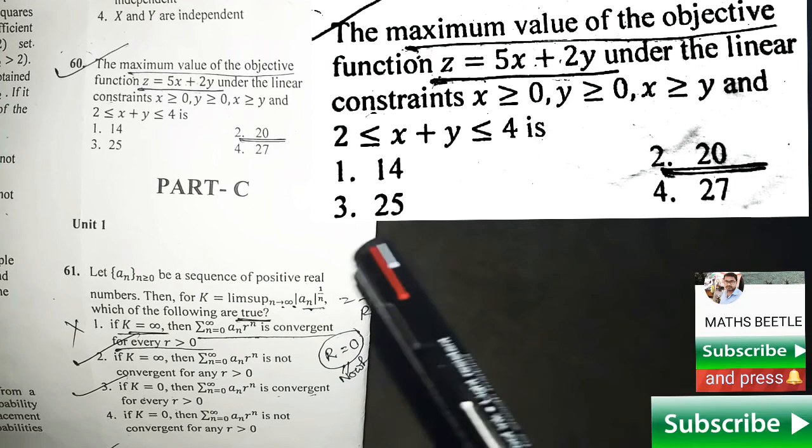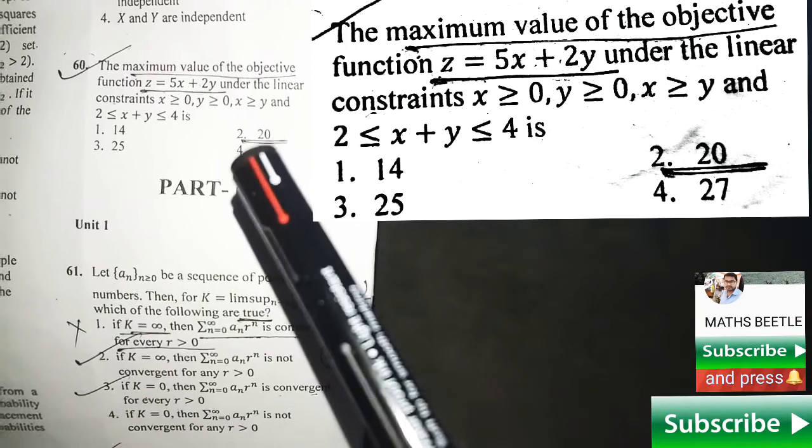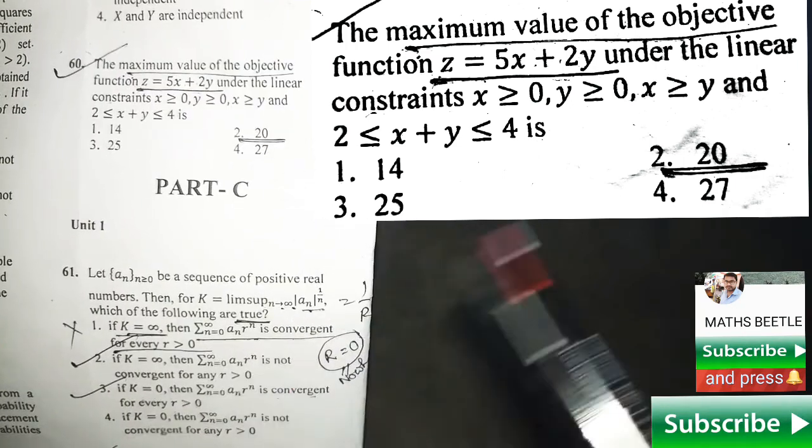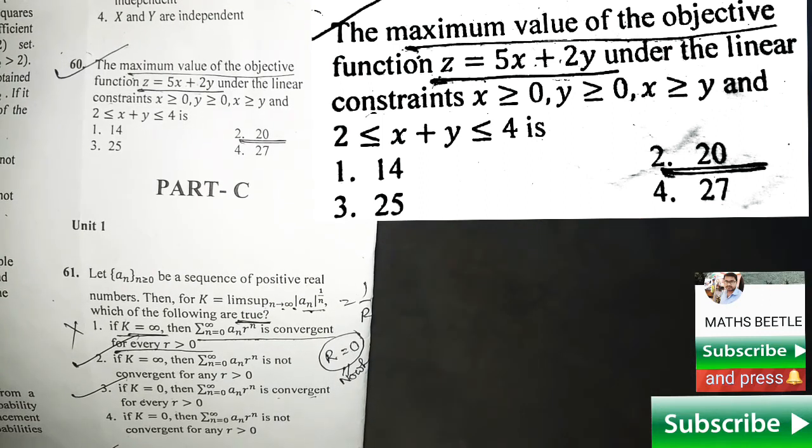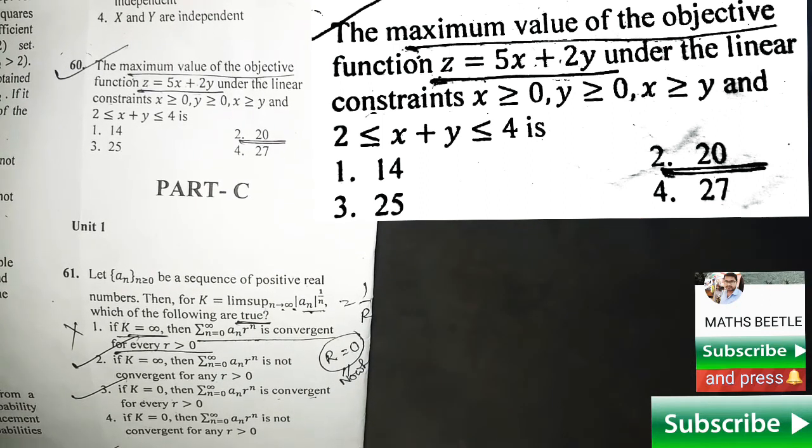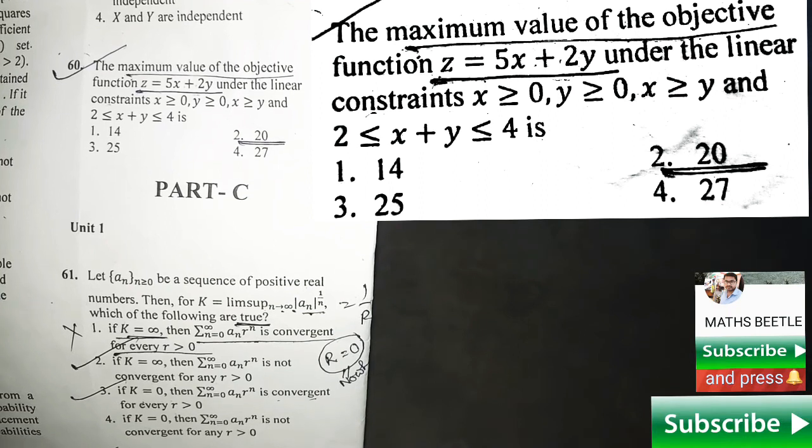They have given z equals 5x plus 2y under four constraints, and depending upon this data, they are asking which one is going to be the correct option.